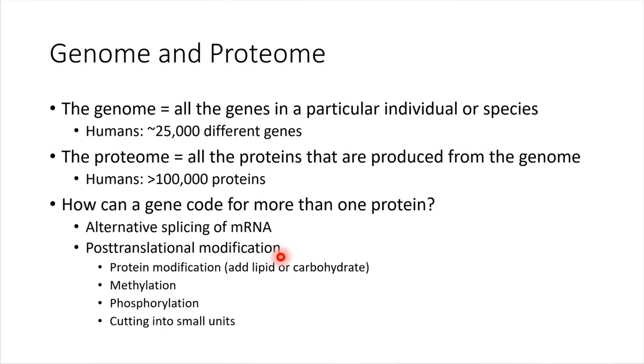And then there are also what are called post-translational modifications. So once we've actually made a protein, we can modify it. We can change it up; there are ways that our cells can do that, so protein modifications are possible. Methylation, phosphorylation, we'll be seeing some of these a little bit later on. These are other ways to modify proteins and change their functions. And then we can also just cut up proteins. Sometimes if you have one really big protein, it'll do one job. If you cut it into two pieces, then each piece will go and do a different job. So all of those are examples of ways that we can end up with more proteins than just 25,000.